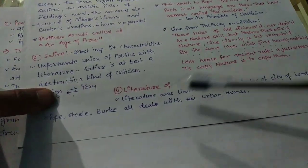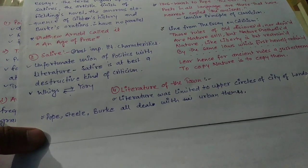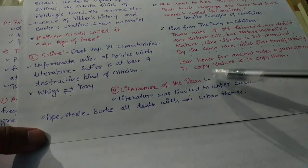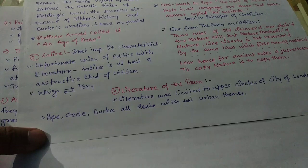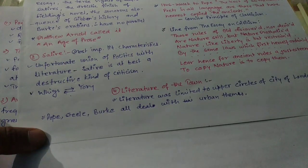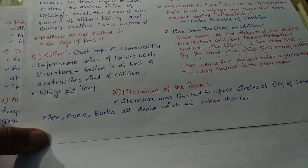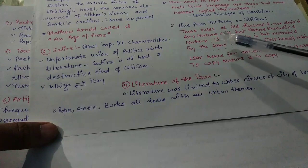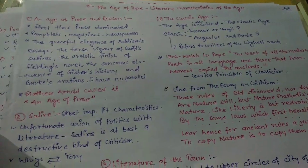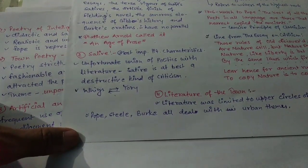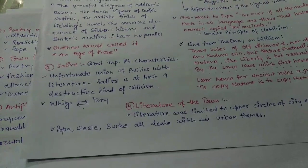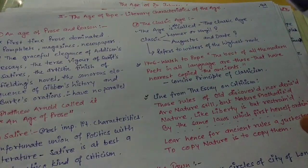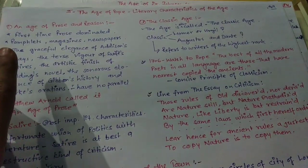Literature of the town was another key characteristic. Literature in the Age of Pope was limited to the upper circle of the city of London. By comparison, in the later transition period, literature becomes famous in the middle strata of society as well, and one reason for that is the development of the novel. It is important to know the literary characteristics of this Age. Pope, Steele, and Burke all dealt with urban themes.